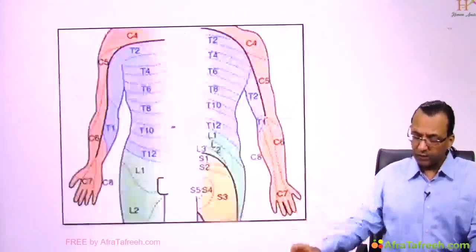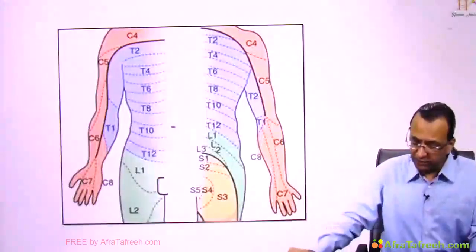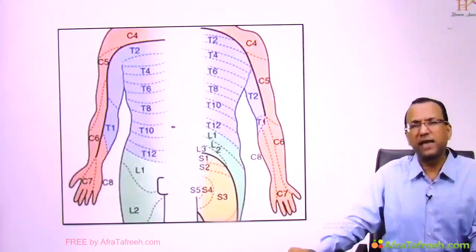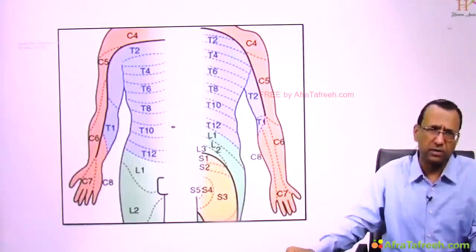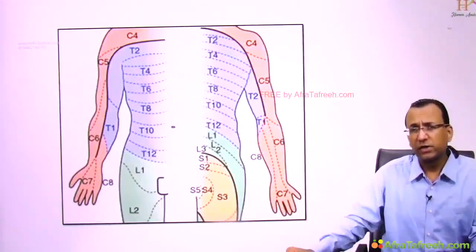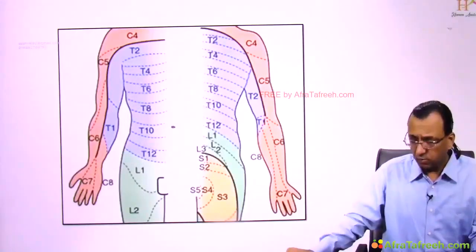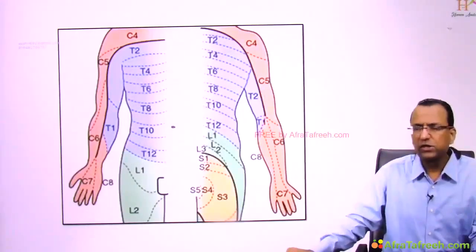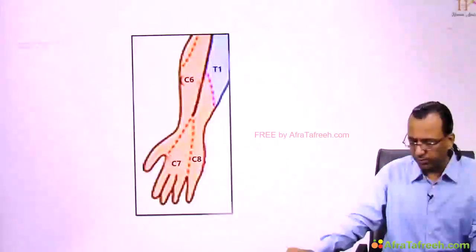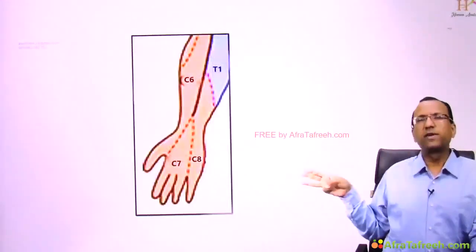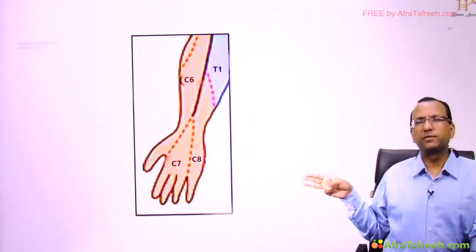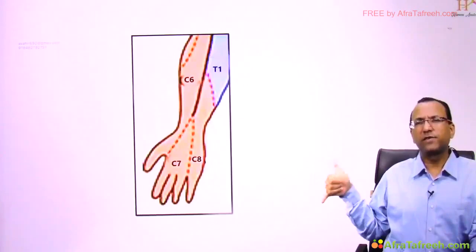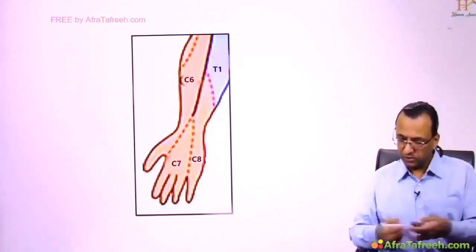Once that is discussed, a diagram from the latest Harrison's Medicine, 20th edition (August 2018), is taken for reference because there is a lot of controversy. Focusing on the upper limb: middle three fingers are C7 dermatome, thumb is C6, and little finger is C8 — you can see this confirmed in Harrison's.